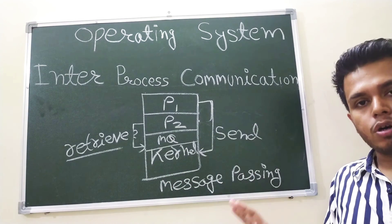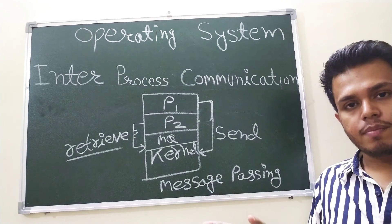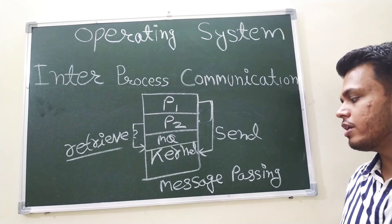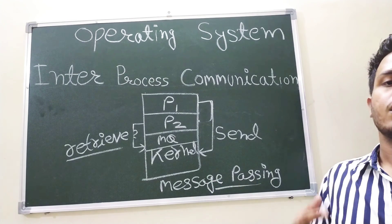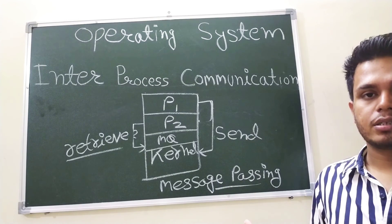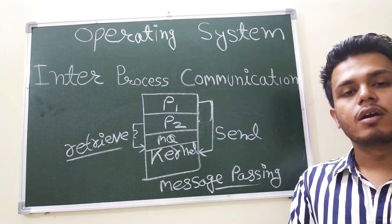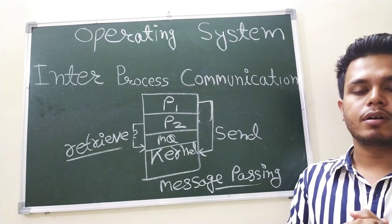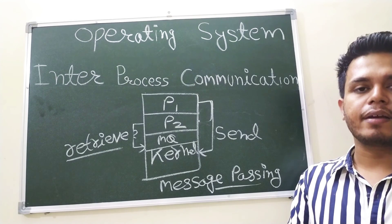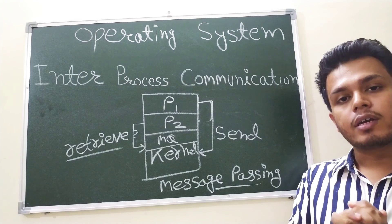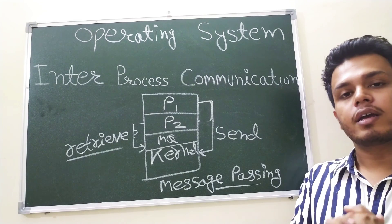So this model is not that much fast, but both models are used in an operating system in their different scenarios. Mostly we use this type of IPC communication. So this is all about inter-process communication. I hope you understand this concept. Keep watching, keep learning. Do not forget to give your genuine feedback in the comments.